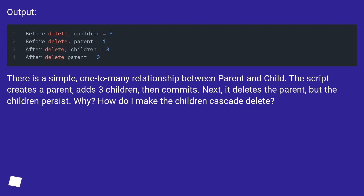There is a simple one-to-many relationship between parent and child. The script creates a parent, adds three children, then commits. Next, it deletes the parent, but the children persist. Why? How do I make the children cascade delete?